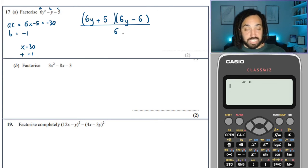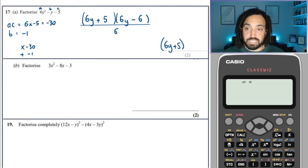Because they times to make minus 30 and add to make minus 1. And then all we need to do is just divide one of the brackets by 6. Okay. Well, the bracket on the right can be divided perfectly by 6. So that is the one we're going to divide by 6.